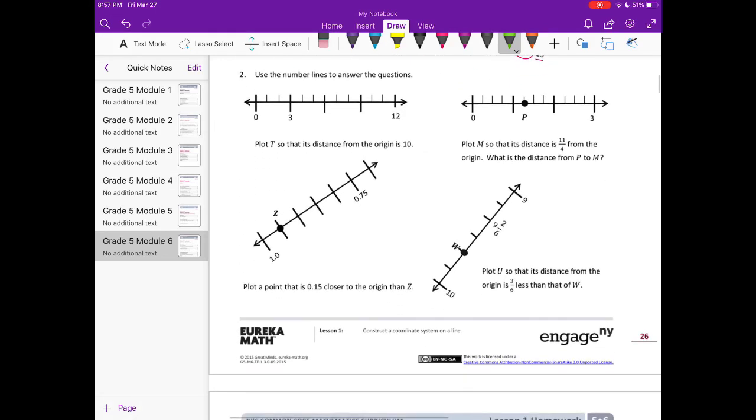Number 2, use the number lines to answer the questions. Plot T so that its distance from the origin is 10. So again, the origin is 0. We have 1, 2, 3, 4, 5, 6, 7, 8, 9, 10, 11, 12.